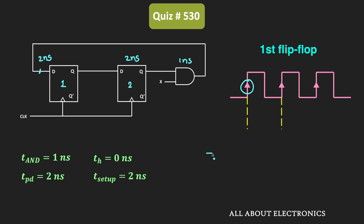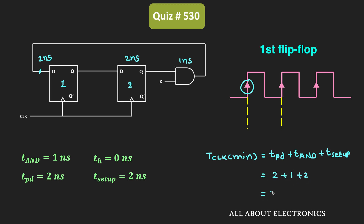For the first flip-flop, the minimum clock duration equals the propagation delay of the flip-flop plus the propagation delay of the AND gate plus the setup time: 2 ns + 1 ns + 2 ns = 5 nanoseconds. That means the next clock edge for the first flip-flop should come no sooner than 5 nanoseconds — the minimum required clock duration for the first flip-flop is 5 nanoseconds.